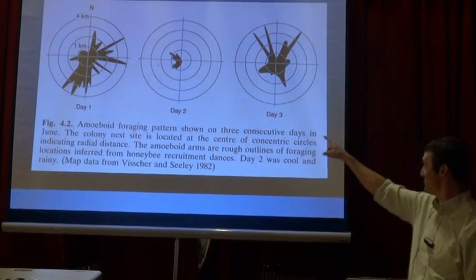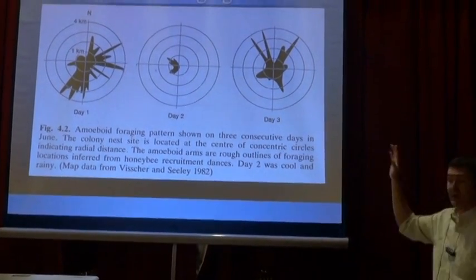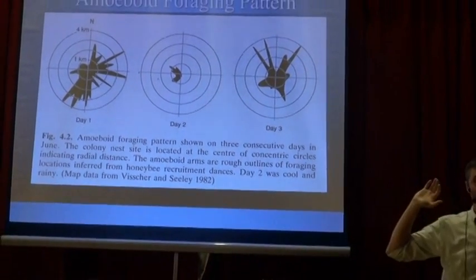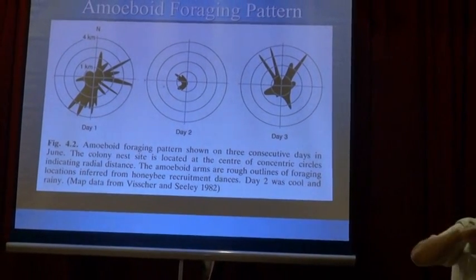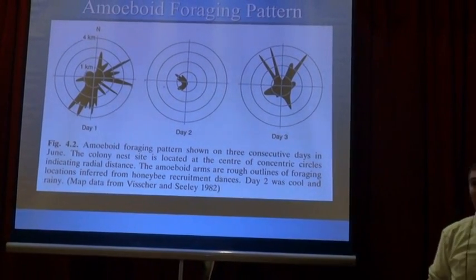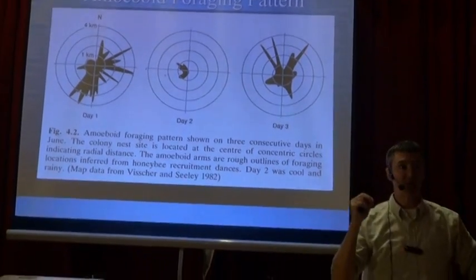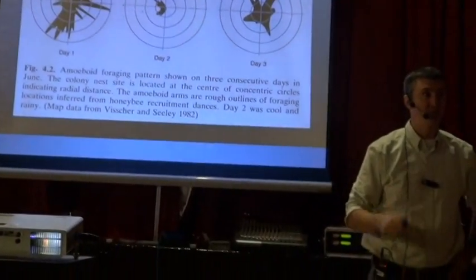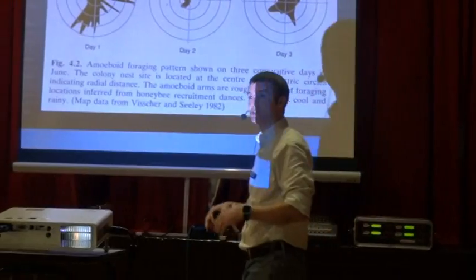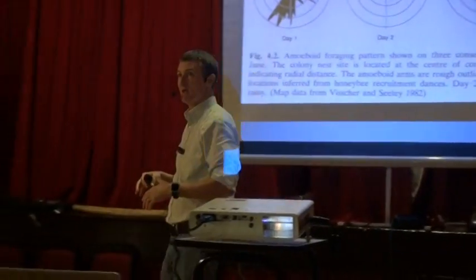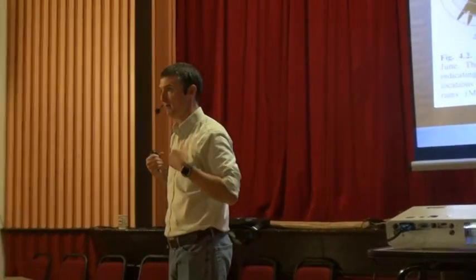On day two, it rained. On day three, they foraged in a completely different direction, exploiting the resources north of them. So while they may have been foraging on the same species of plant, having lots of bees doing lots of things, they're able to exploit that fully in whatever area it's available that day.